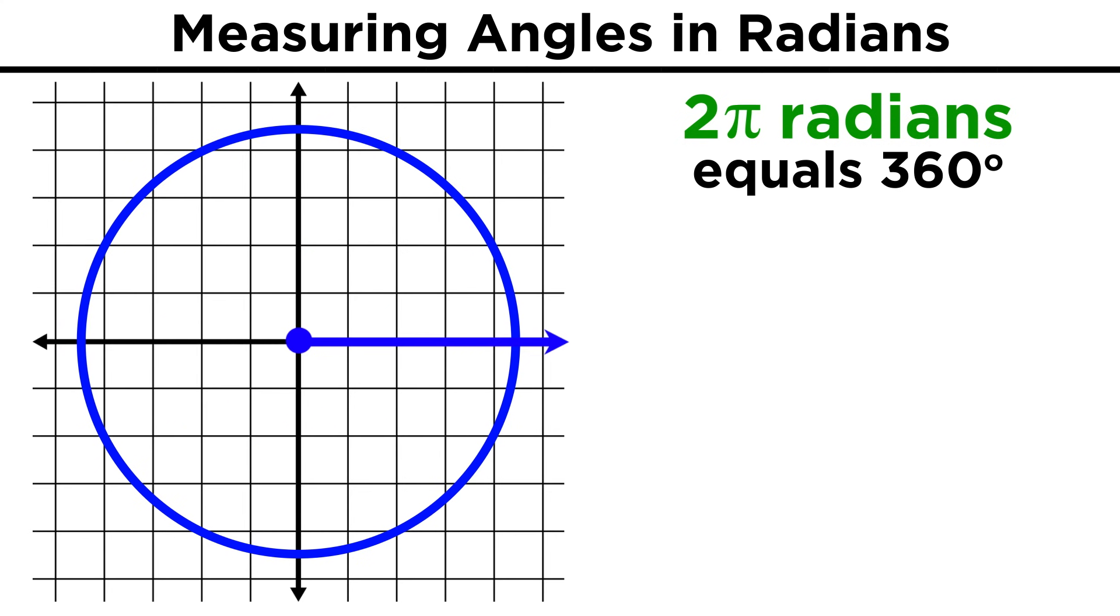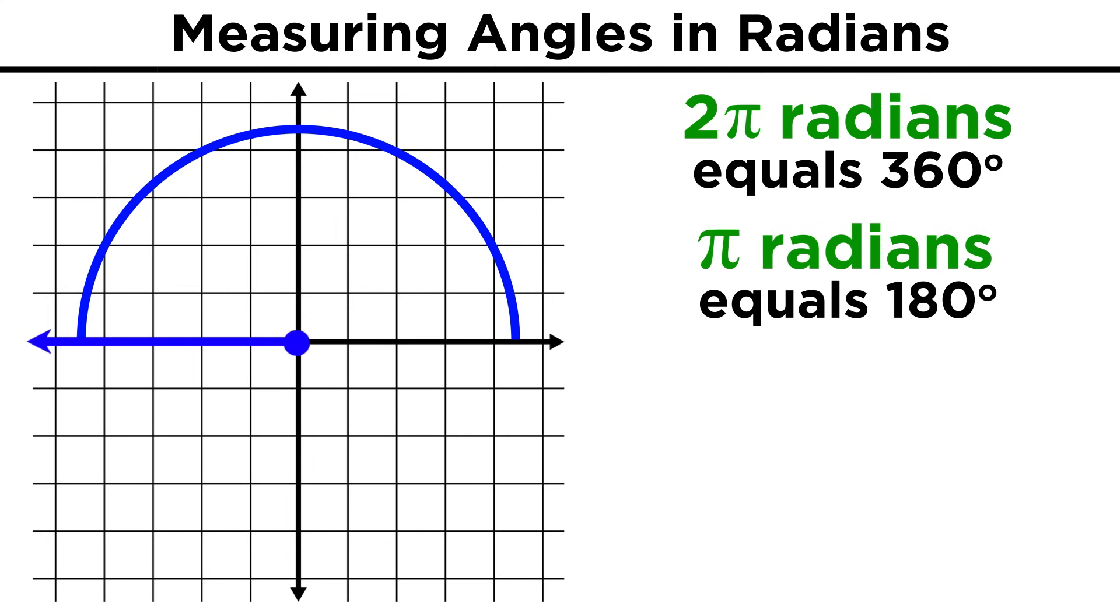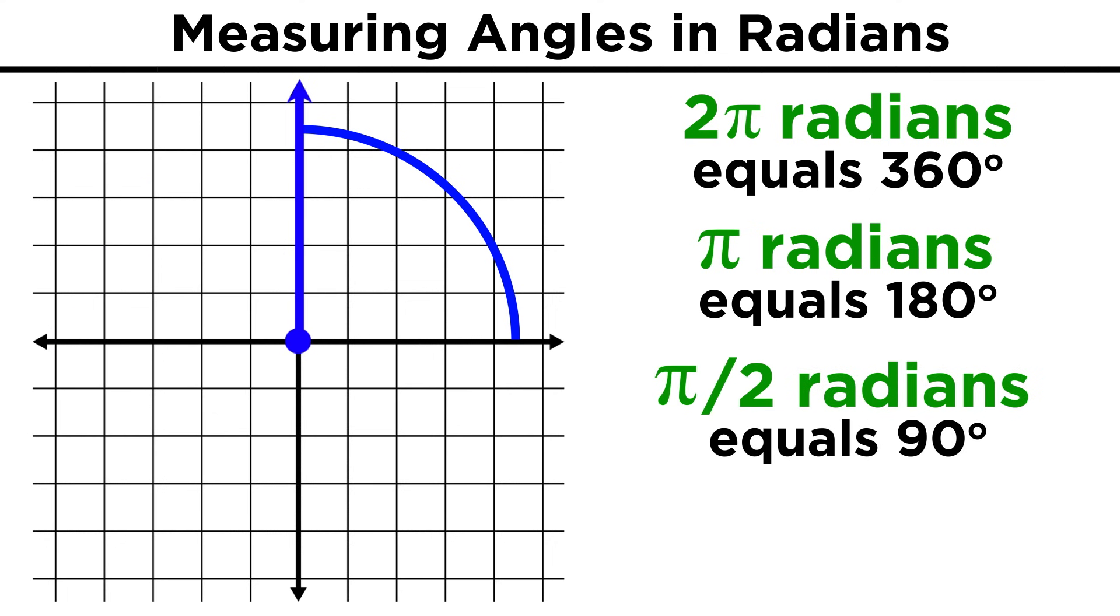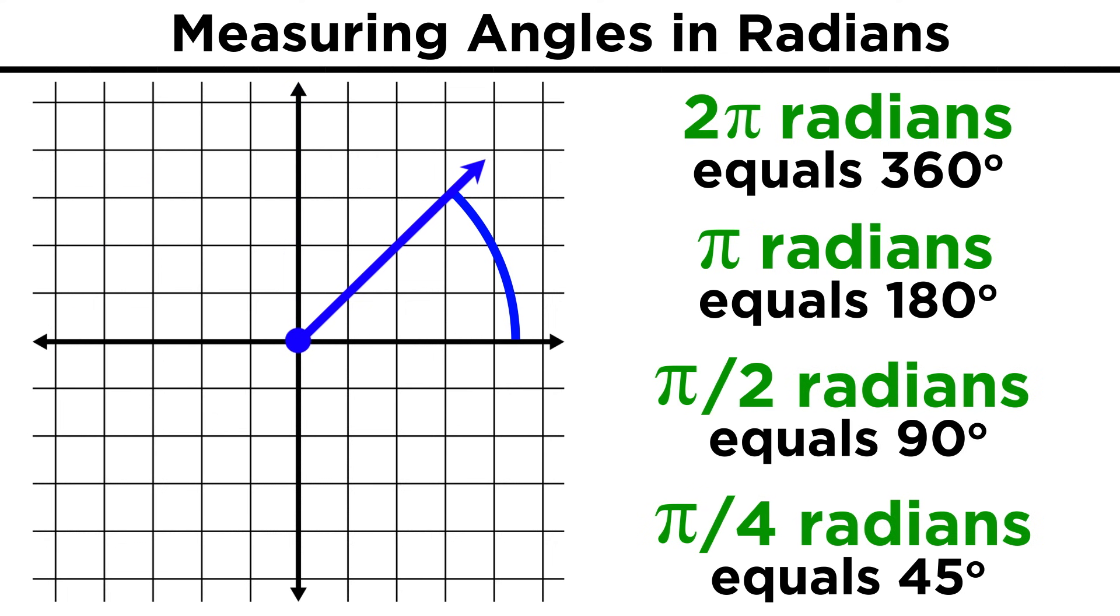2π radians is therefore equal to 360 degrees. π radians brings us halfway around, or 180. Half pi brings us up here to 90, and quarter pi brings us to 45.